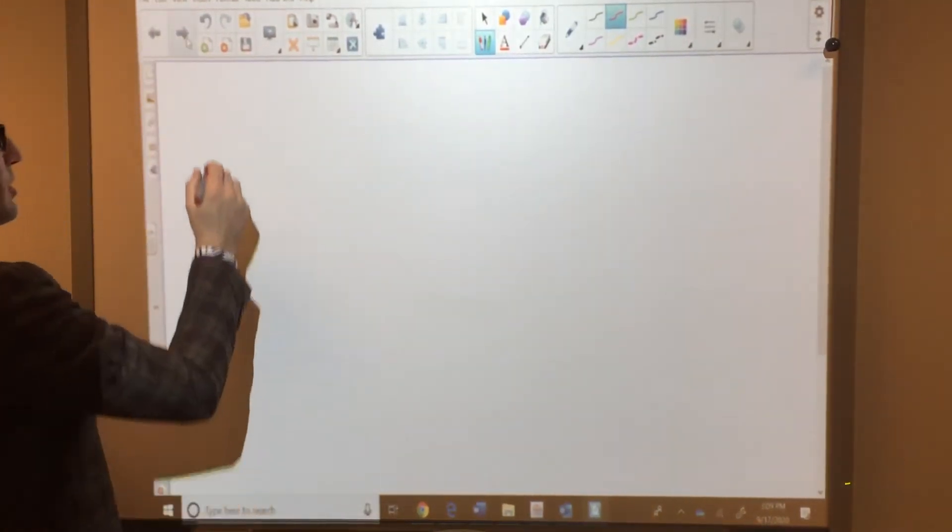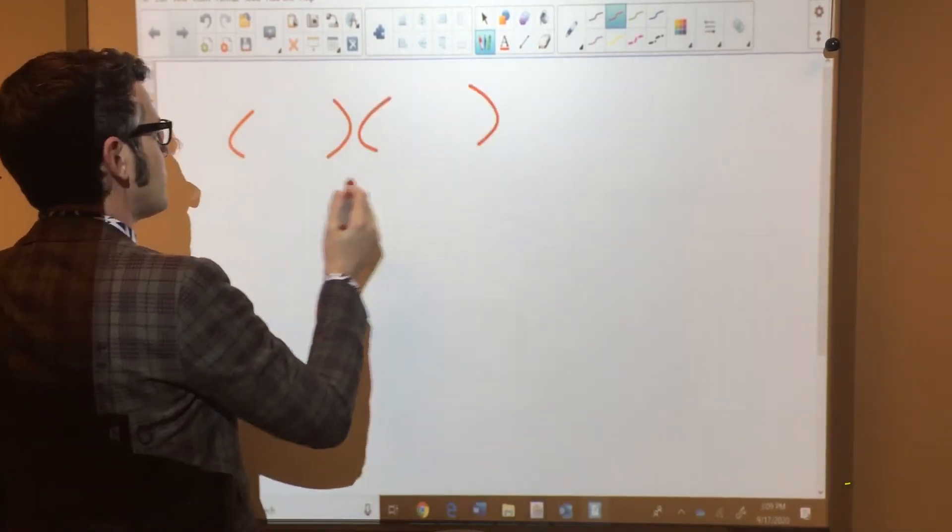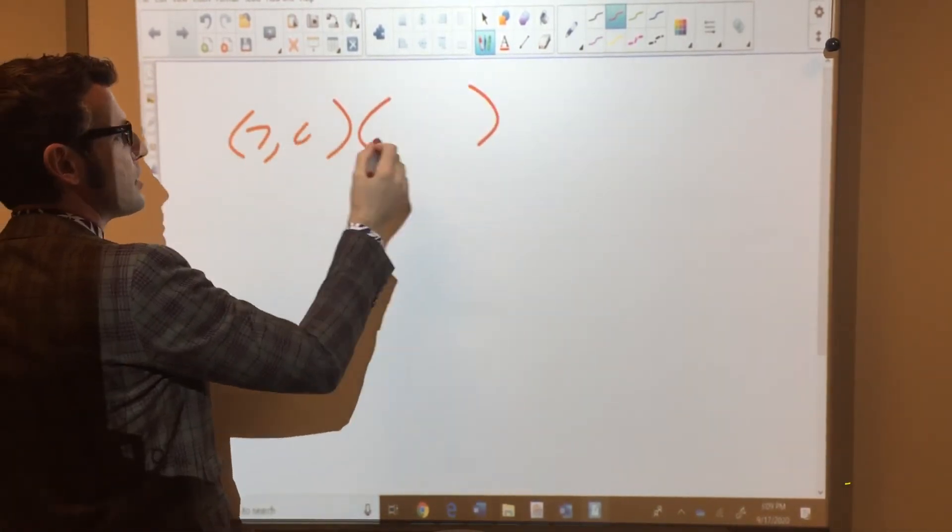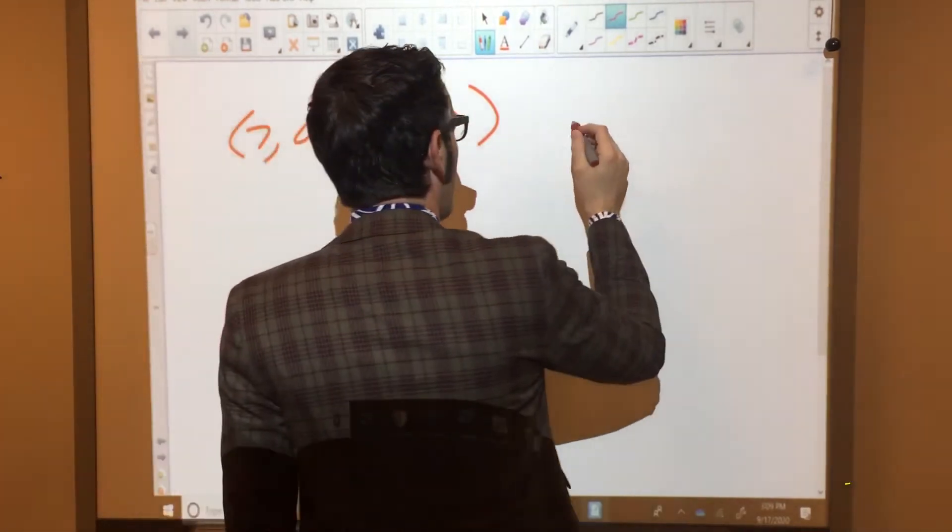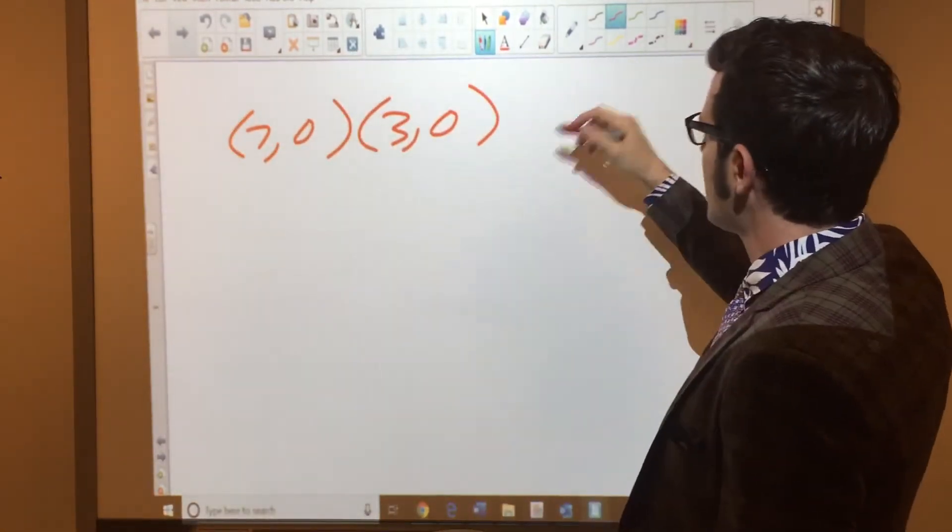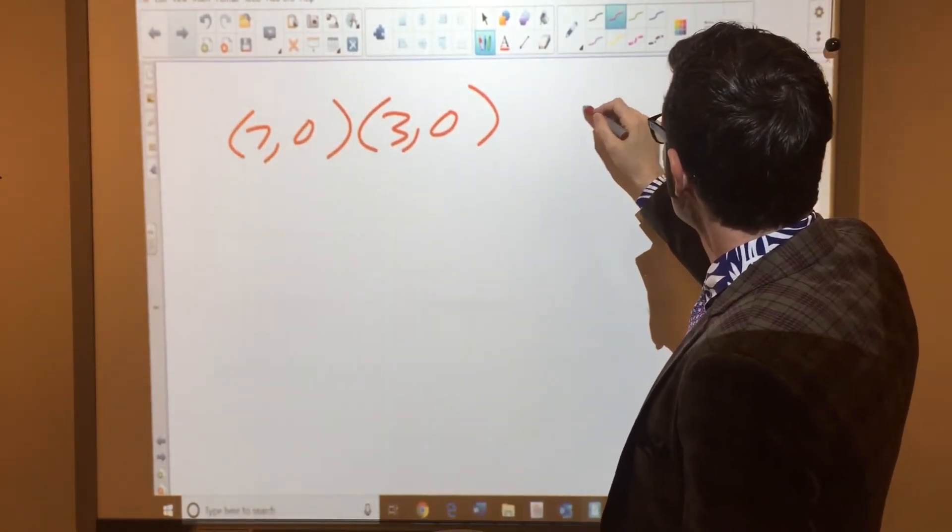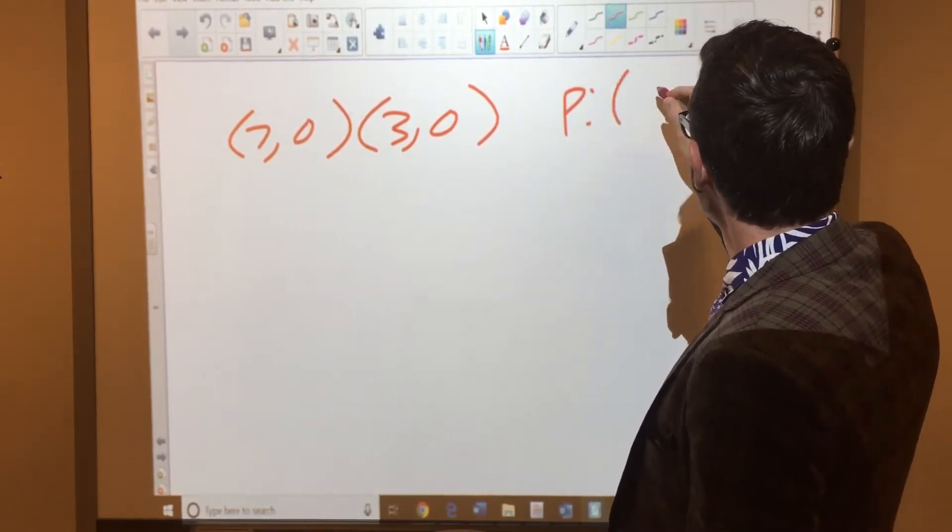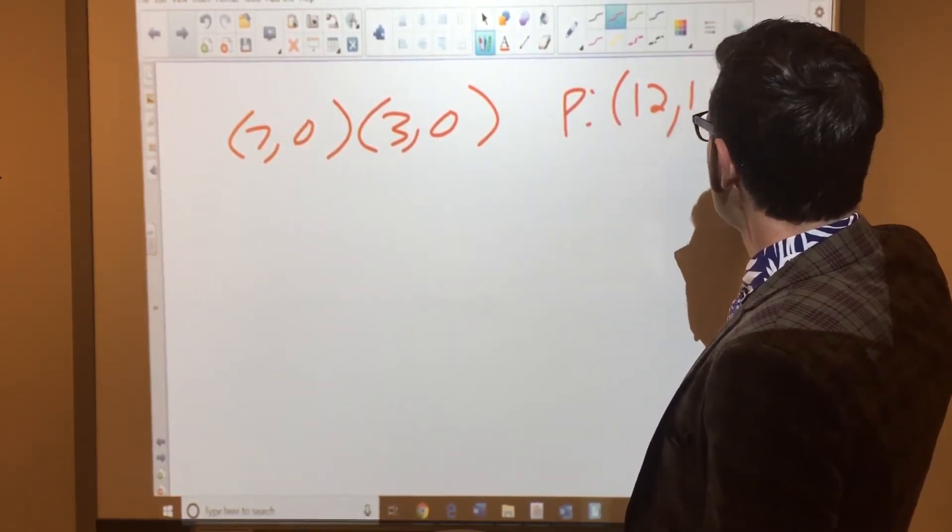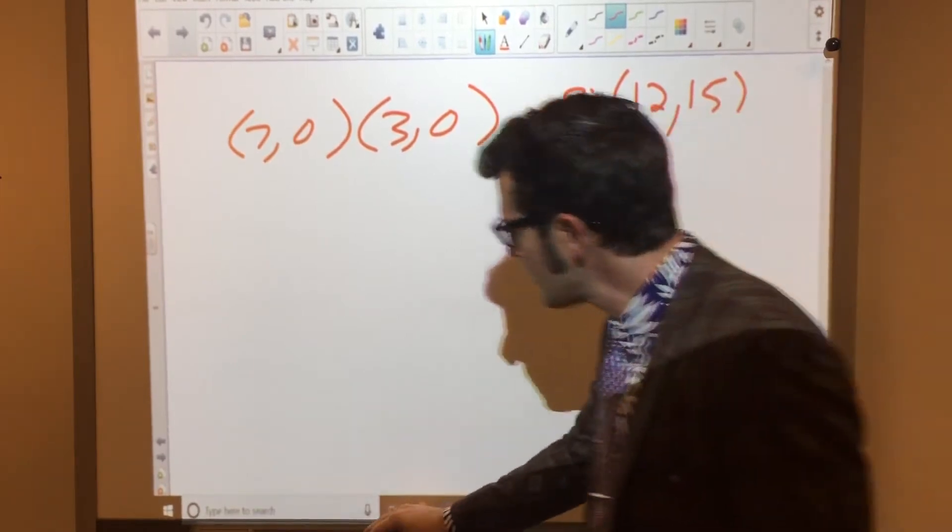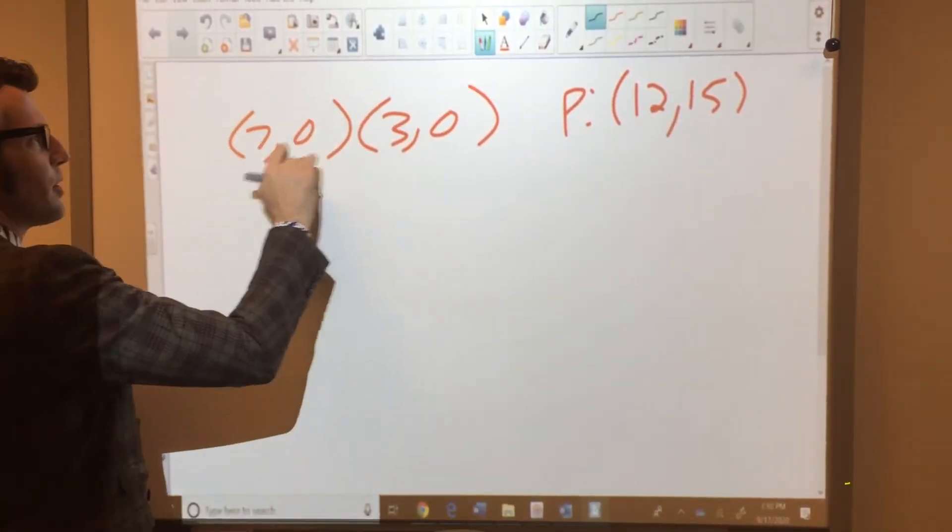If I were given this information, if they said, hey, here's the intercepts. How about 7 comma 0 and 3 comma 0. And it goes through a point, like, let's say it goes through the point 12, 15. Okay, well, I know these are the x-intercepts.